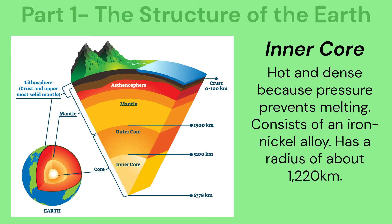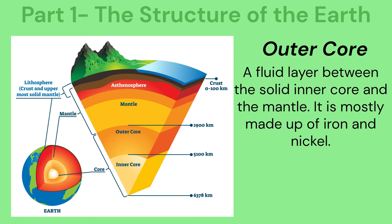The inner core is hot and dense because pressure prevents melting. It consists of an iron-nickel alloy and has a radius of about 1,220 kilometres. The outer core is a fluid layer between the solid inner core and the mantle, mostly made up of iron and nickel.